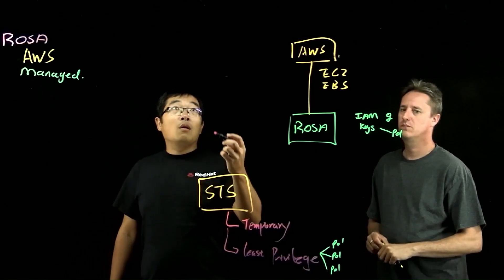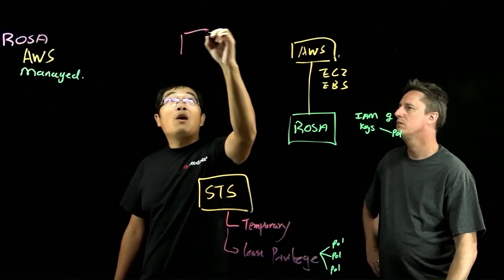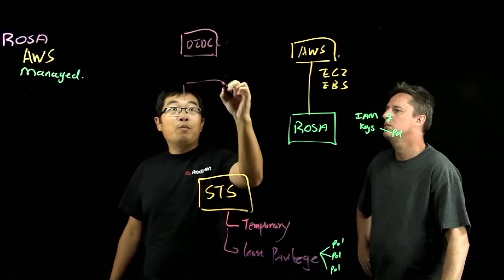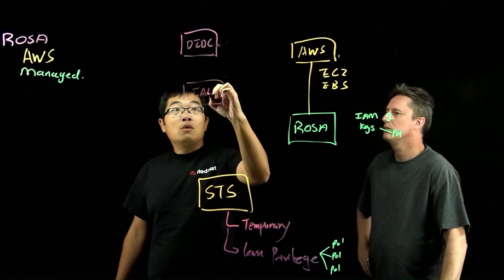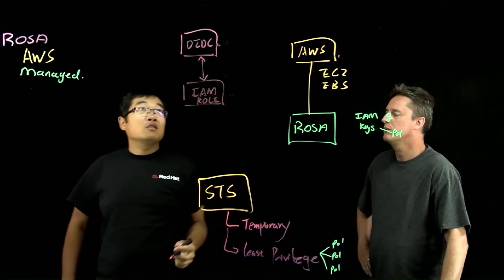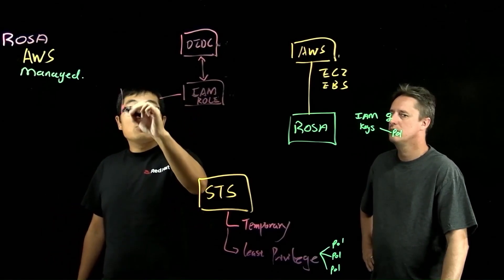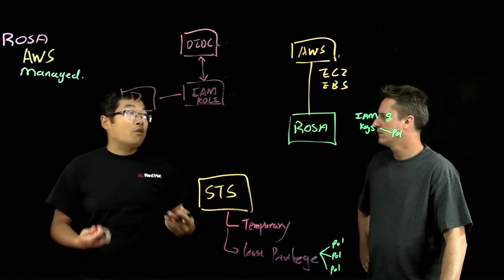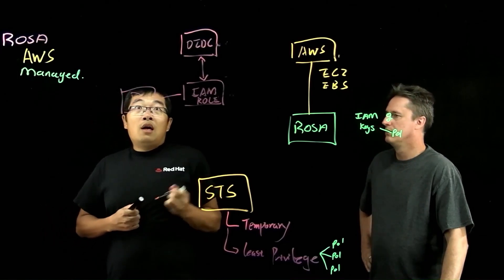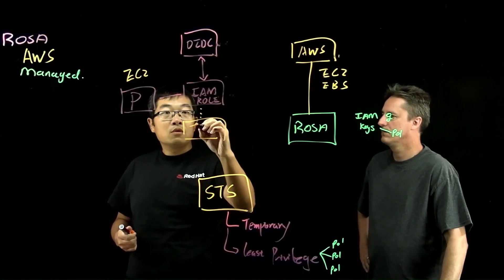So Red Hat services, when it's trying to create the ROSA cluster, is providing an OIDC provider. And this OIDC provider actually trusts with IAM role. So there's a trust relationship between this OIDC and IAM role. And this role actually has a very least privileged policy, for example, only talk with EC2.